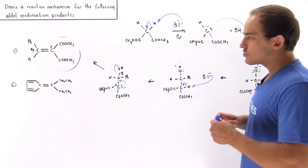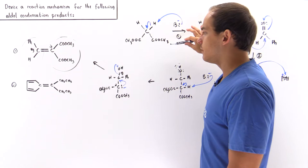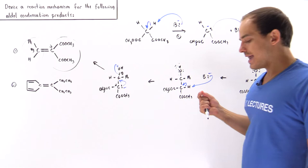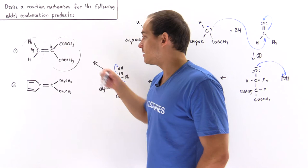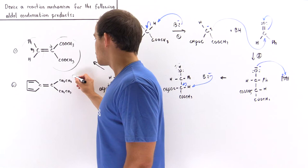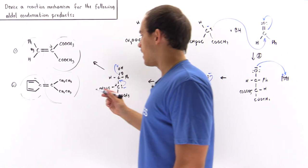What about product number two? The reaction mechanism for its formation is essentially the same, except instead of using the diketone nucleophile, we use a different molecule — one that is not exactly a carbonyl group — as our nucleophile. This is still an aldol condensation, though not a Knoevenagel condensation. One of the groups is a ketone, and the other is a molecule that will act as our nucleophile.